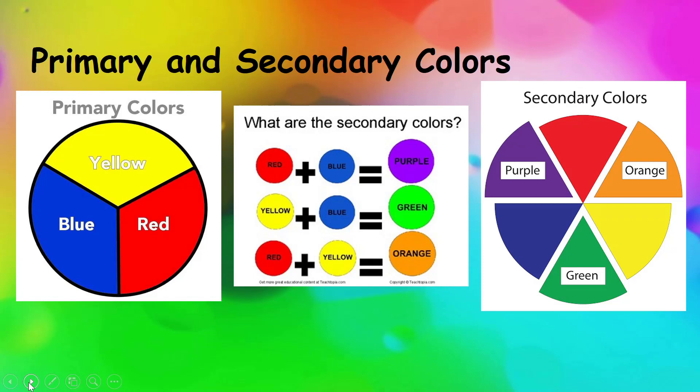The secondary colors have to go between the two primary colors that make them on the color wheel. When you add yellow and blue together and it makes green, the only place green can go on the color wheel is between yellow and blue.